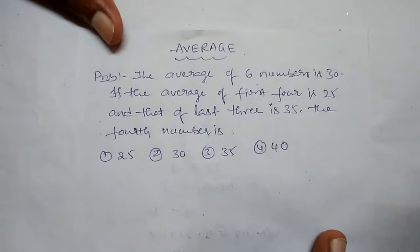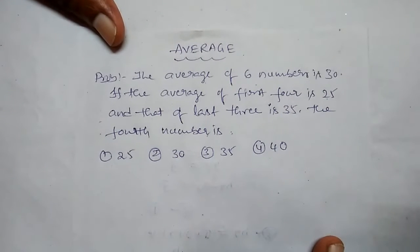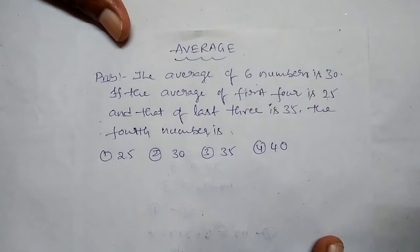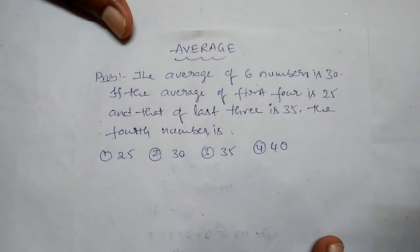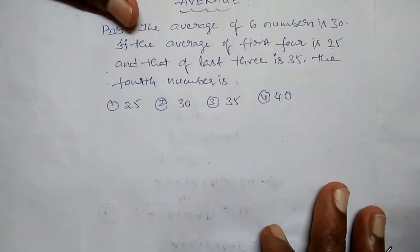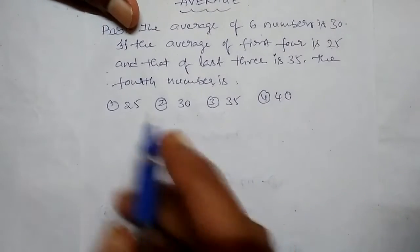Hi, this is Suresh. Here is the average problem. The average of six numbers is 30. If the average of first four numbers is 25, and the last three numbers is 35, the fourth number is dash.